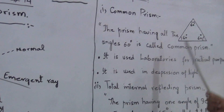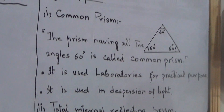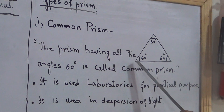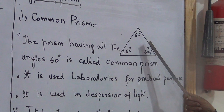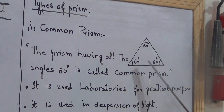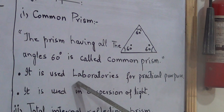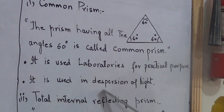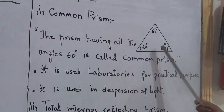Next: types of prism. There are two types. First: common prism. A prism having all angles equal to 60 degrees is called a common prism. All three angles are 60 degrees. It is used in laboratories for practical purposes and it is used in the dispersion of light. These are the two common uses of the common prism.